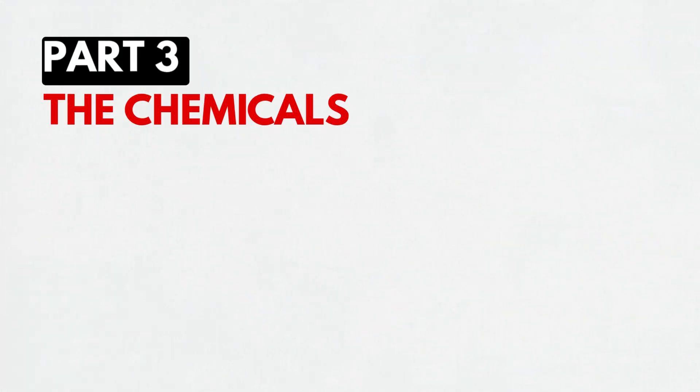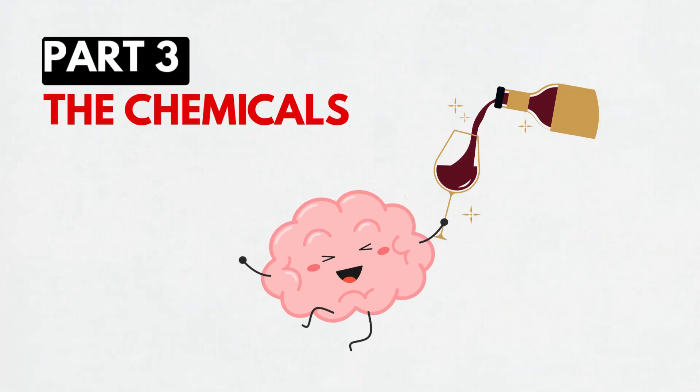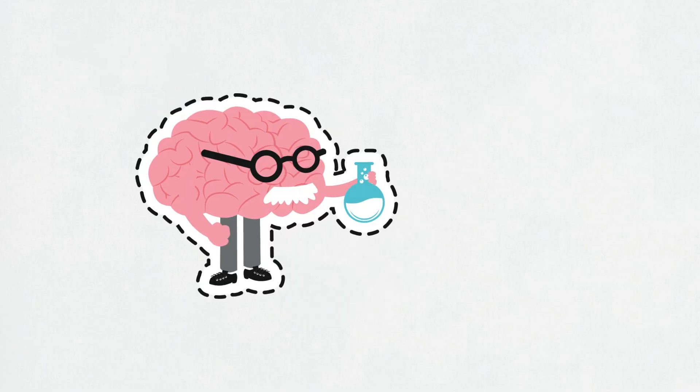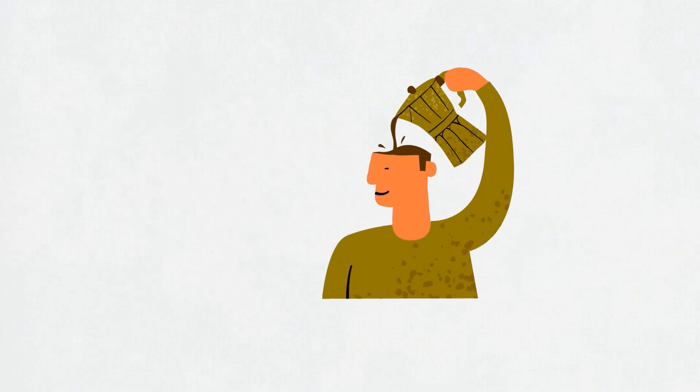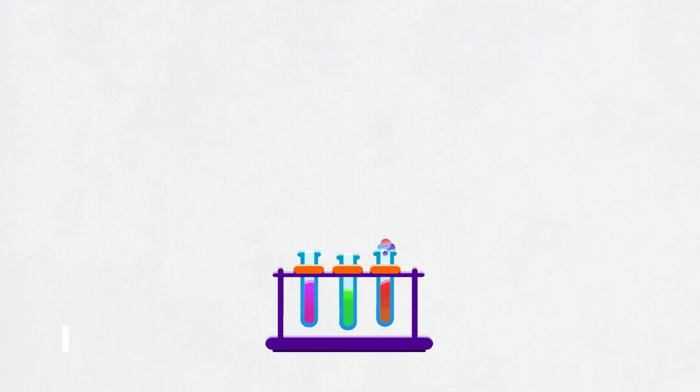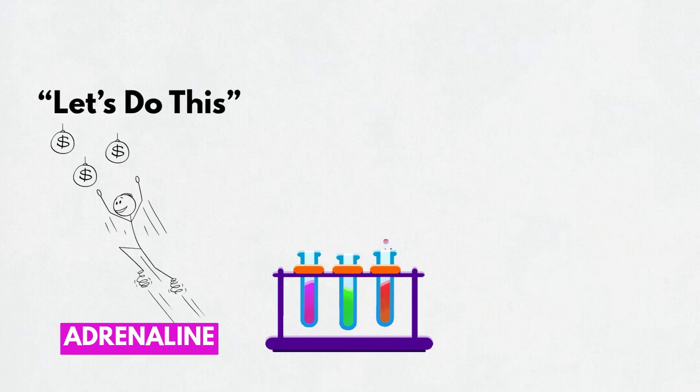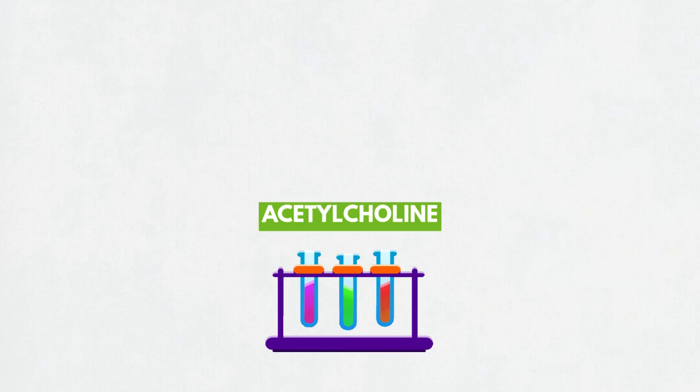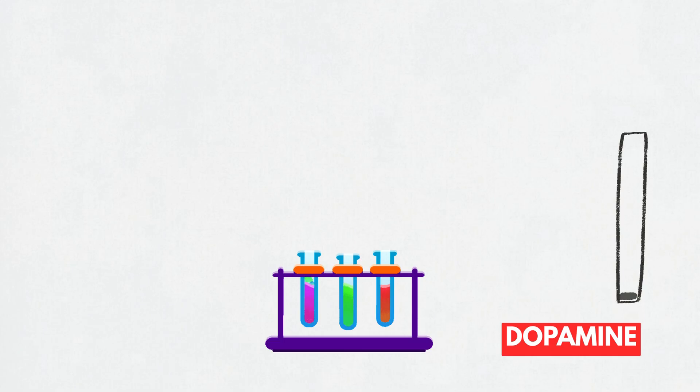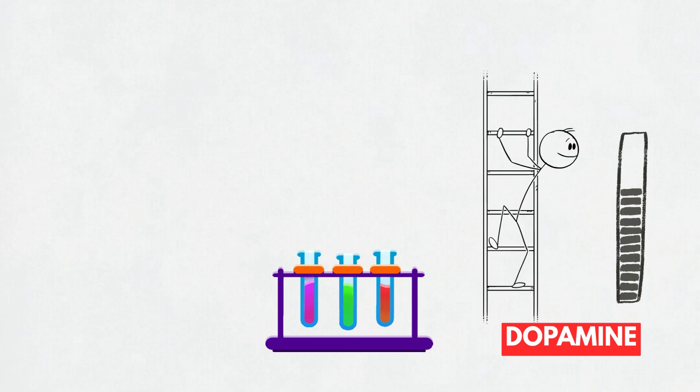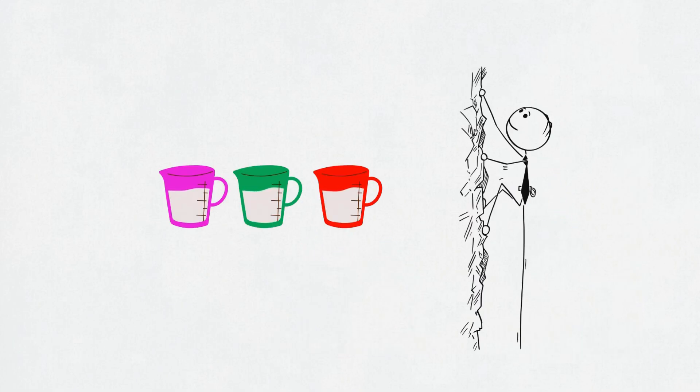Part three. The chemicals, aka the brain's mood mix. Now let's talk chemistry, because focus runs on brain juice. Here are the three key players. Adrenaline gets you going. It's that let's do this kickstart. Acetylcholine locks your attention in like a laser pointer. Dopamine is your progress tracker. Every time you take a step forward, it gives you a little you-got-this buzz. When these are in balance, you feel sharp and motivated.